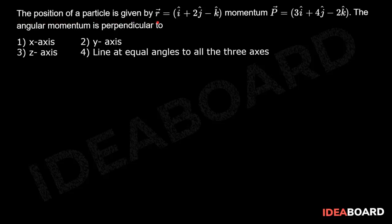The position of a particle is given by r bar is equal to i cap plus 2j cap minus k cap. Momentum p bar is equal to 3i cap plus 4j cap minus 2k cap.